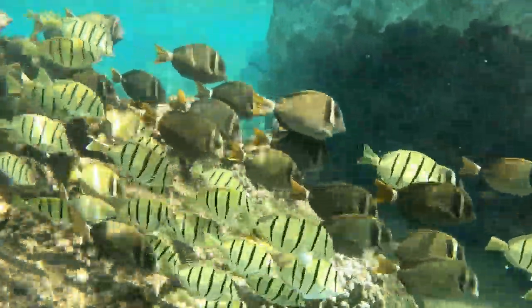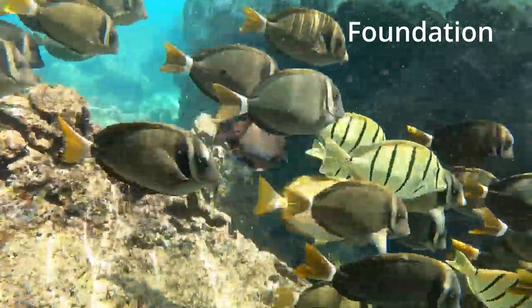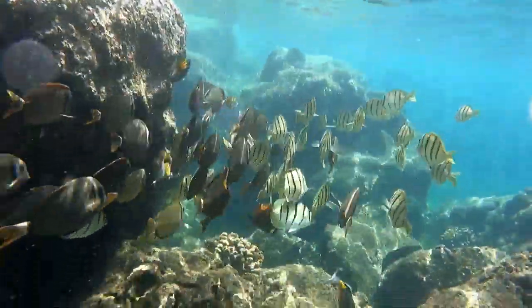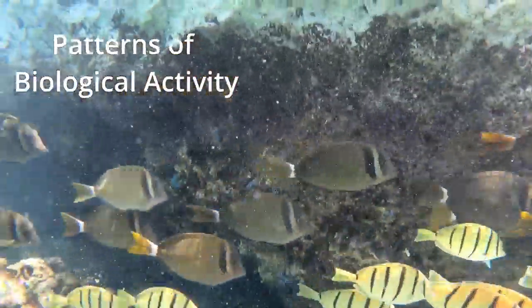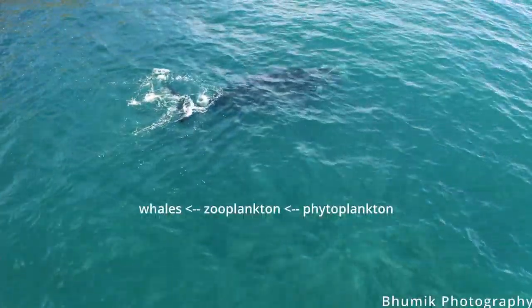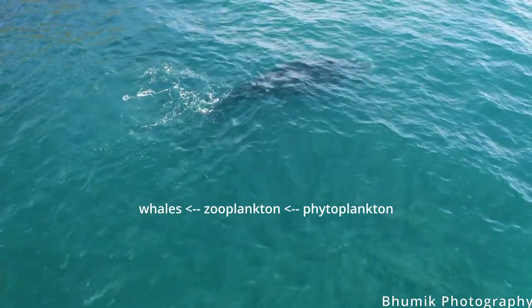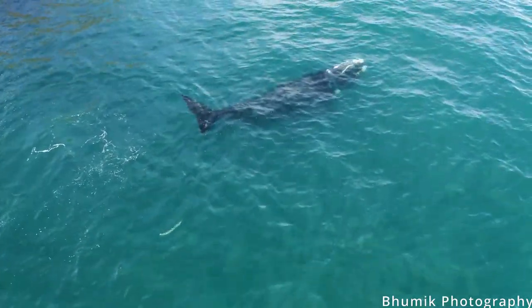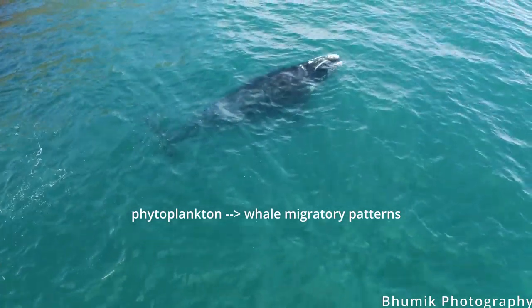We established that plankton are the foundation of the food web. Therefore, the information that plankton collections offer help us understand patterns of biological activity. For example, the diet of humpback whales consists mainly of zooplankton, which feed on phytoplankton. Therefore, looking at phytoplankton abundance helps explain whales' migratory patterns.